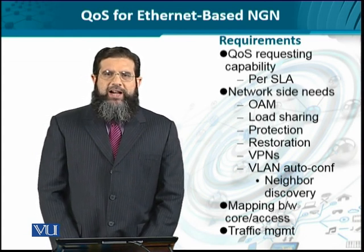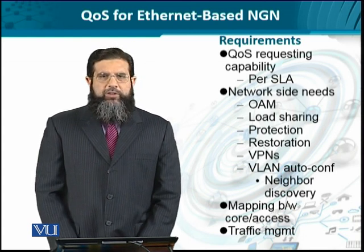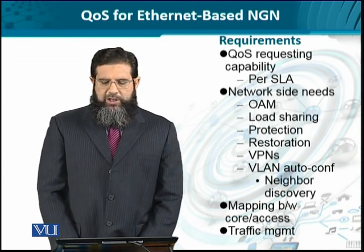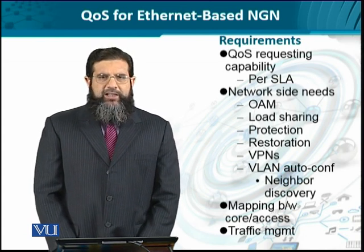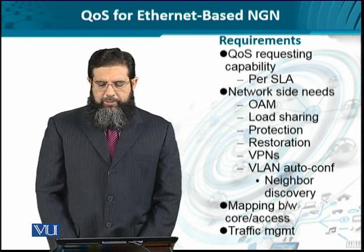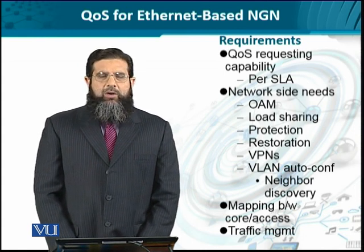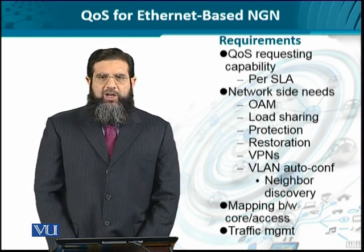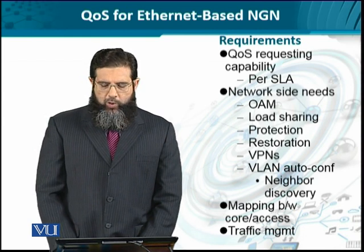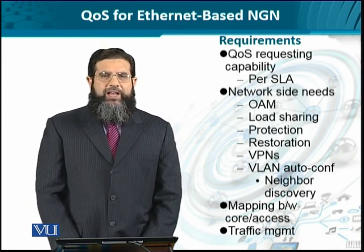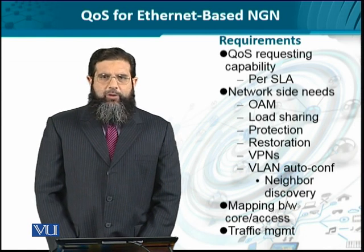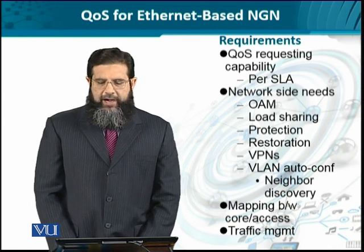Ethernet on the access side does not really address virtual private networks, which is more of a router-based mechanism. So now that we are considering Ethernet-based NGN and looking at quality of service aspects, VPN support also has to be provided. Additionally, VLANs are restricted to only the access side switches, but if we are incorporating Ethernet in the core, then VLAN mechanisms have to be extended to the core side as well. Some kind of discovery mechanism has to be provided across the core and access boundaries.